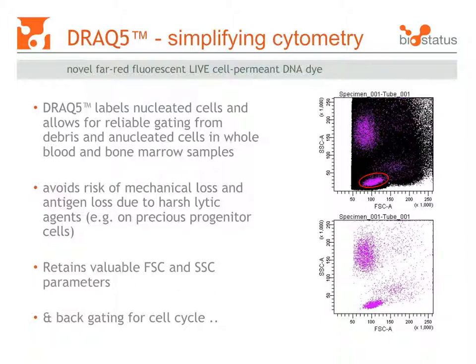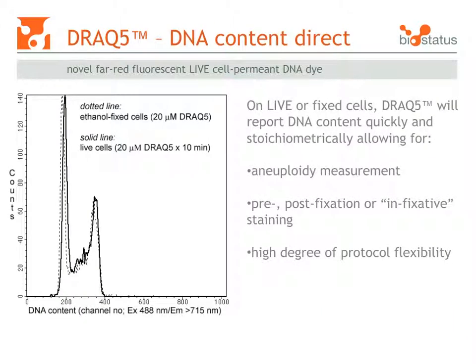DRAC5 allows gating of nucleated cells from enucleated or damaged cells in complex biological samples such as blood and bone marrow, without the need for time consuming and often damaging sample preparation procedures such as centrifugation and red cell lysis. It reports DNA content in cells with stoichiometry to permit cell cycle and aneuploidy analysis as performed by flow cytometry.